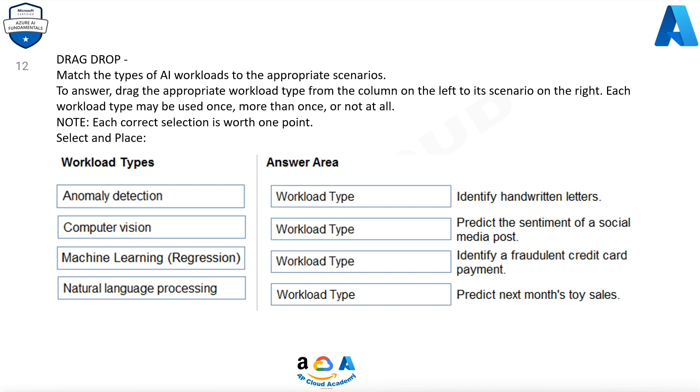Workload types: Anomaly detection, Computer vision, Machine learning regression, Natural language processing. Answer area scenarios: Identify handwritten letters. Predict the sentiment of a local media post. Identify a fraudulent credit card payment. Predict next month's toy sales.